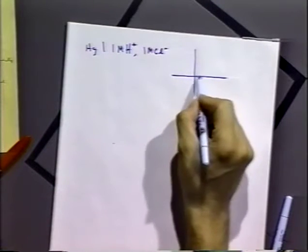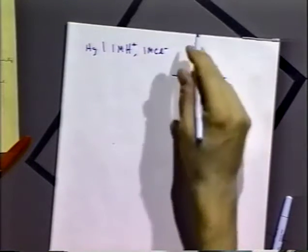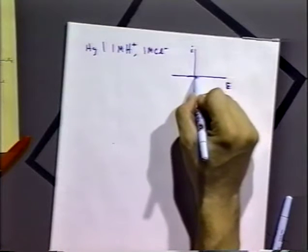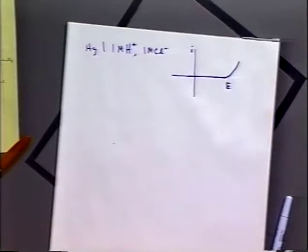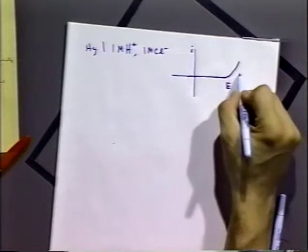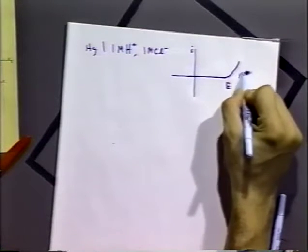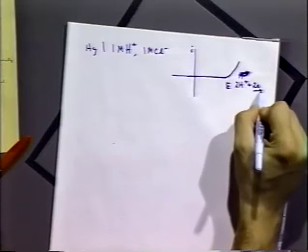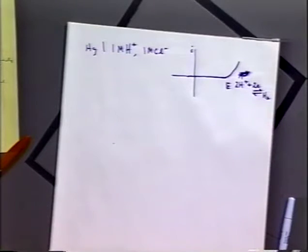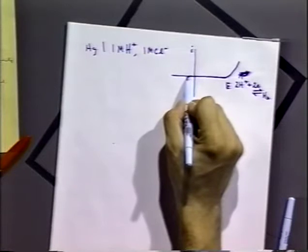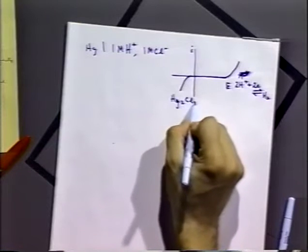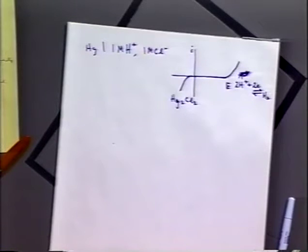If we do a potential-voltage curve, with current on the y-axis and potential on the x-axis, over a range of potentials no reaction occurs. Only until we get quite negative do we get a reaction for the reduction of hydrogen ions to hydrogen gas. But quite quickly as we go to positive potentials, we see a reaction to form Hg₂Cl₂, which is a calomel-type reaction.